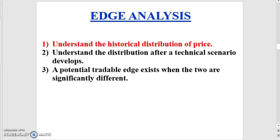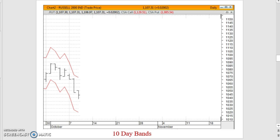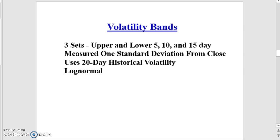Let's take a look at the historical distribution of price first — volatility bands. We're going to look at three sets of volatility bands: upper and lower 5, 10, and 15-day volatility bands. These bands are measured one standard deviation from the close. We use a 20-day historical volatility number to determine the width of those bands, and these are of course log-normally distributed.